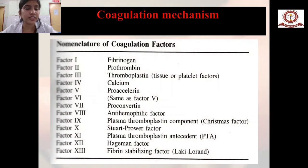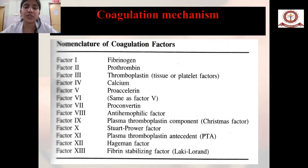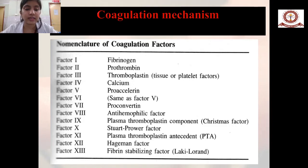The coagulation mechanism occurs via clotting factors 1 to 13. Factor 1 is fibrinogen, 2 is prothrombin, 3 is thromboplastin, 4 is calcium, 5 is proaccelerlin, 6 is the same as factor 5, 7 is proconvertin, 8 is antihemophilic factor, 9 is plasma thromboplastin component, 10 is Stuart power factor, 11 is plasma thromboplastin antecedent, 12 is Hageman factor, and 13 is fibrin stabilizing factor.